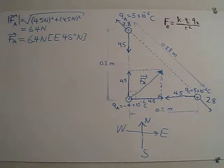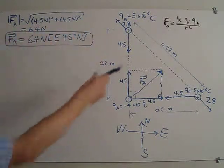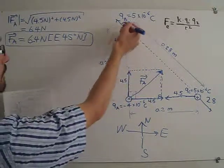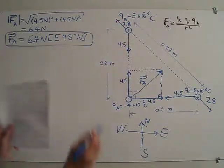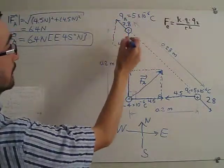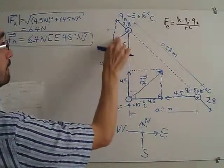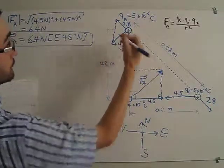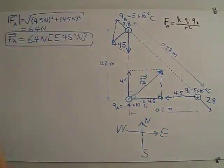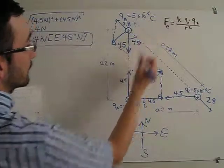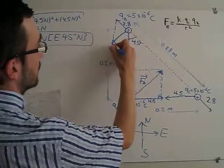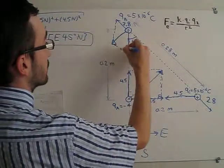We can now carry out the calculation for vector addition of forces acting on QB. The forces are 4.5 and 2.8 Newtons. Using the parallelogram method, we draw a side parallel to the 2.8 force and a side parallel to the 4.5 force, and the net force will be the diagonal. Because this angle is 45 degrees, and corresponding sides are parallel, this angle in the triangle is also 45 degrees.